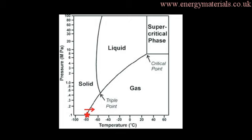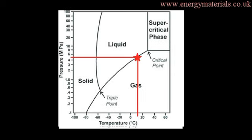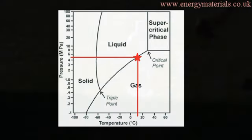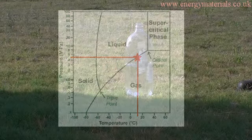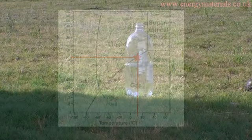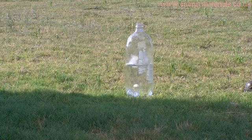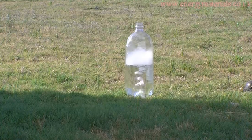If we place some dry ice into a pressure vessel, it is possible to form an equilibrium between liquid CO2 and gaseous CO2. At around room temperature, this equilibrium will be around 50 to 70 atm. So if we try to form this equilibrium at room temperature within a soda bottle, the structural integrity of the soda bottle is insufficient.